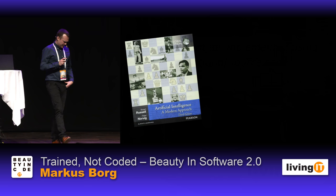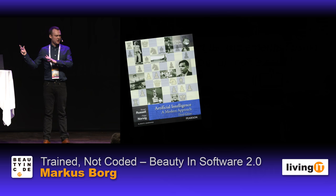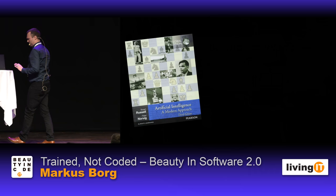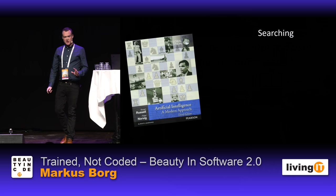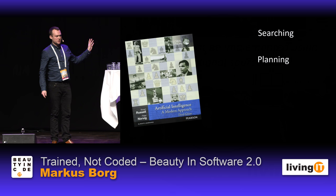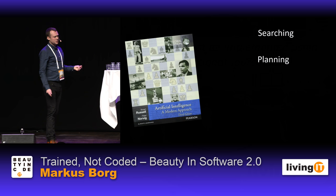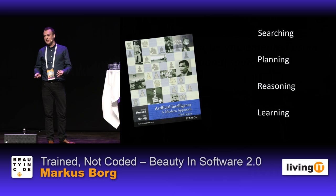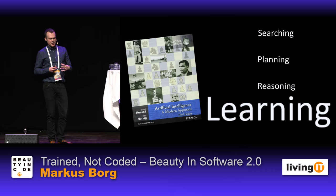Looking at the textbooks on AI — the most commonly used one at universities is by Russell and Norvig, a very thick book. In a book like that you'd find chapters on searching and optimization, planning, reasoning using logic and probabilistic approaches. And then you have learning — and learning is really what has exploded in the last decade. This is where all the momentum is.